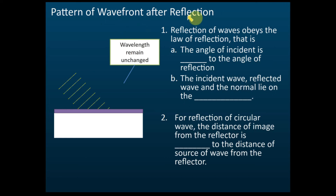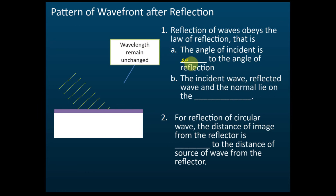The patterns of wave fronts after reflections — that is for a plane wave — obey the laws of reflection. The angle of incidence is equal to the angle of reflection, and the incident wave, the reflected wave, and the normal all lie on the same plane.